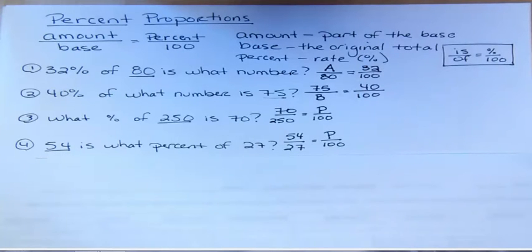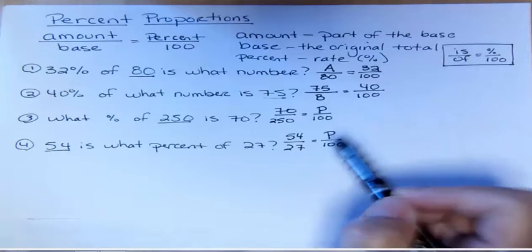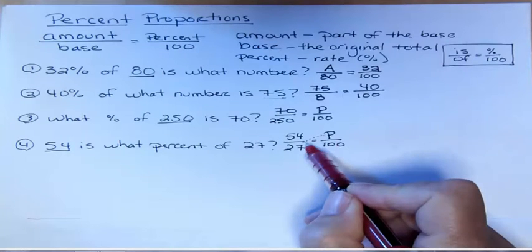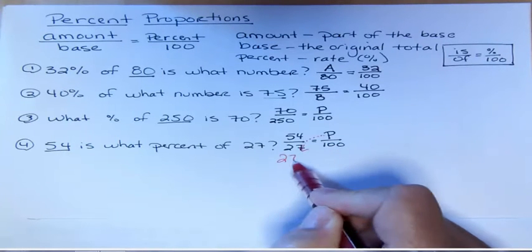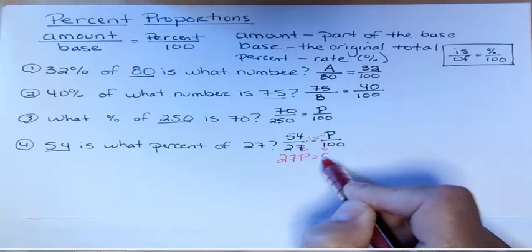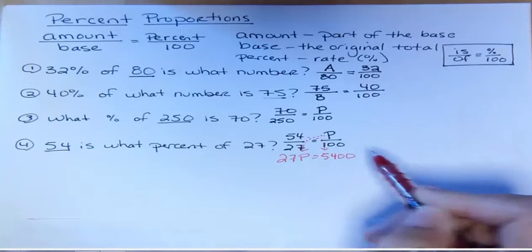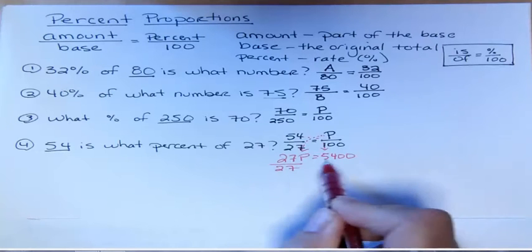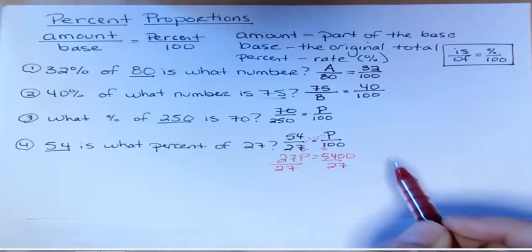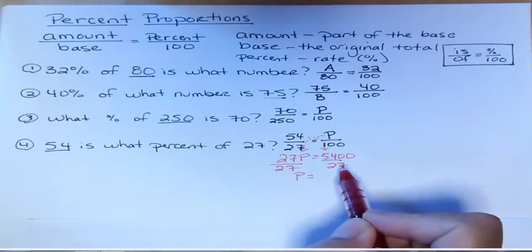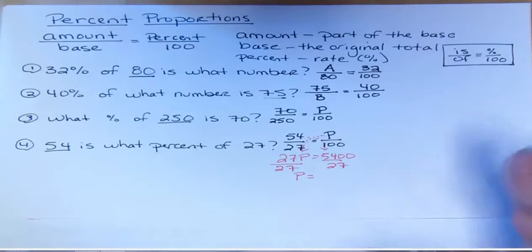Want to solve one of those or two of those? Let's solve this last one for sure. The method that we talked about in another video was to cross multiply. 27 times P is 27P, and 54 times 100 is 5400. After you cross multiply, you divide by the coefficient. The coefficient is 27, so that's what I'm going to divide by, and that gives me P. I know that 27 goes into 54 twice and I know it's going to be—I know the answer, but I'm going to do it on the calculator because maybe you wouldn't see the answer.